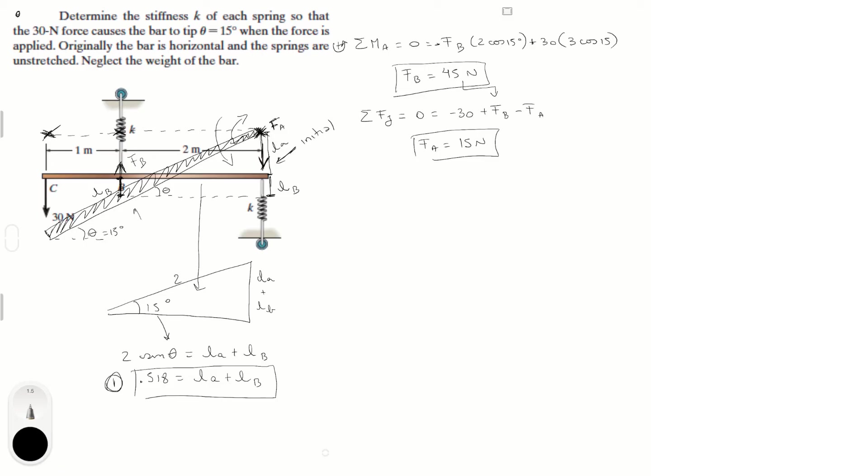But, notice this. You also know that F of B is equal to K times LB, and you also know that F of A is equal to K times LA.